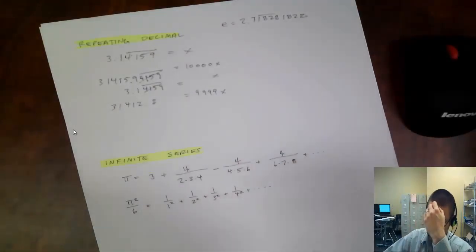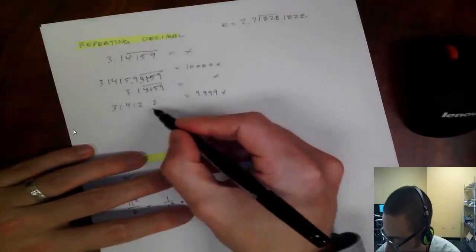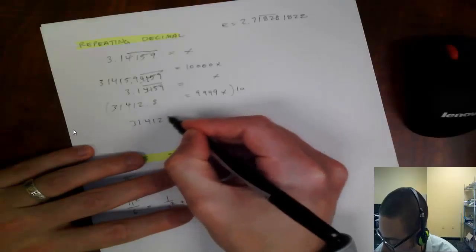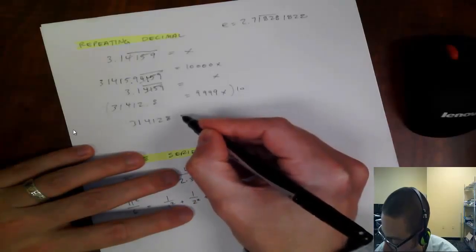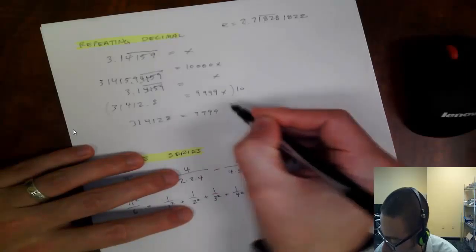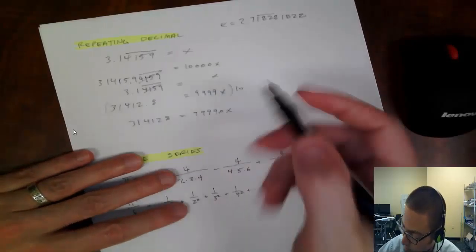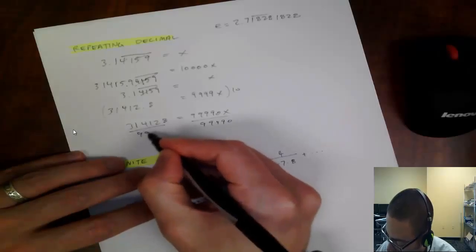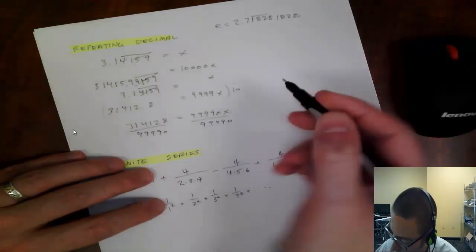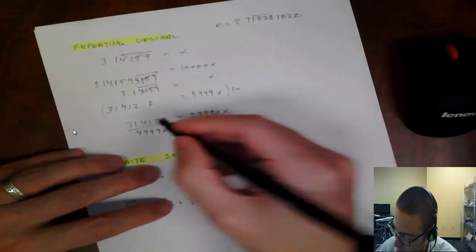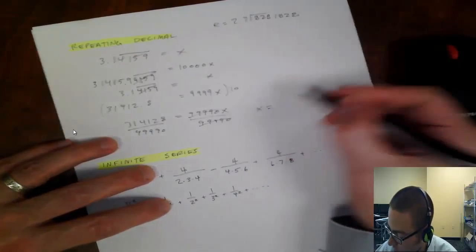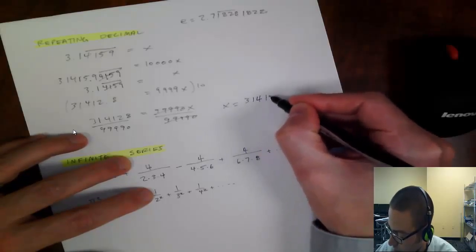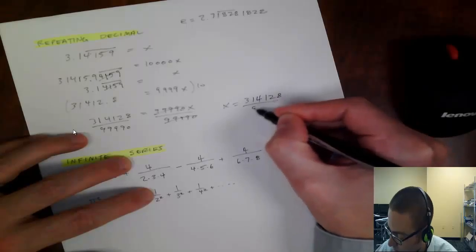Okay, and then I don't want a decimal. I want to have an integer. So, I would multiply everything here by 10. So, 3, 1, 4, 1, 2, 8 equals 9, 9, 9, 9, 0. Because multiplying by 10 just adds a 0. Then I divide both sides by that number. And I have my fraction. So, this is a really pretty accurate fractional approximation for pi. And I could simplify this.